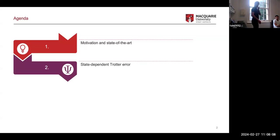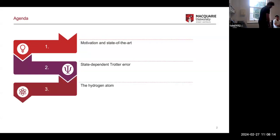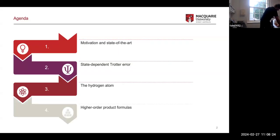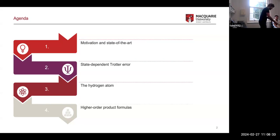Then I will talk about state-dependent Trotter error and introduce our bounds and our results there. I will apply them to the hydrogen atom and show how we can apply these to quantum chemistry problems and chemistry simulations. And then, if I've got time at the end, I want to talk a little bit about higher-order product formulas, which is a more clever way to do trotterization, and also show our results in that area.